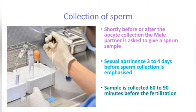Shortly before or after oocyte collection, the male partner is asked to provide a sperm sample. Sexual abstinence for three to four days before sperm collection is emphasized. The sample is collected 60 to 90 minutes before the fertilization process.